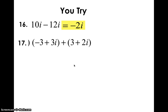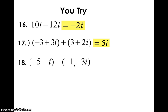Try number 17 on your own — that combines to just 5i. For number 18, don't forget to distribute the negatives: this becomes negative 5 plus 1, which is negative 4, and negative i plus 3i is 2i, giving negative 4 plus 2i.